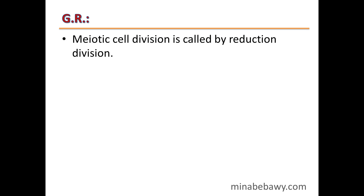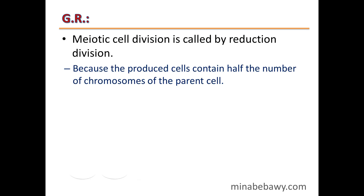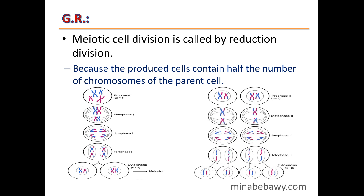Give reason: Meiotic cell division is called reduction division. This is because the produced cells contain half the number of chromosomes — haploid — of the parent cell.